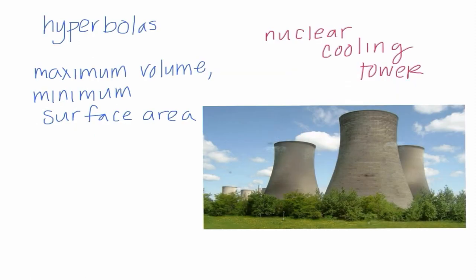So now let's move on to hyperbolas. Mathematically, the reason why a hyperbola is nice is because it gives us a maximum volume with a minimum surface area. So one of the places we see this around the world is in the use of building nuclear cooling towers. So looking at this shape, we can definitely see that these are hyperbolic in nature. And it can hold a maximum amount of material inside with the minimum amount of surface area, which allows them to keep it at the correct temperature.